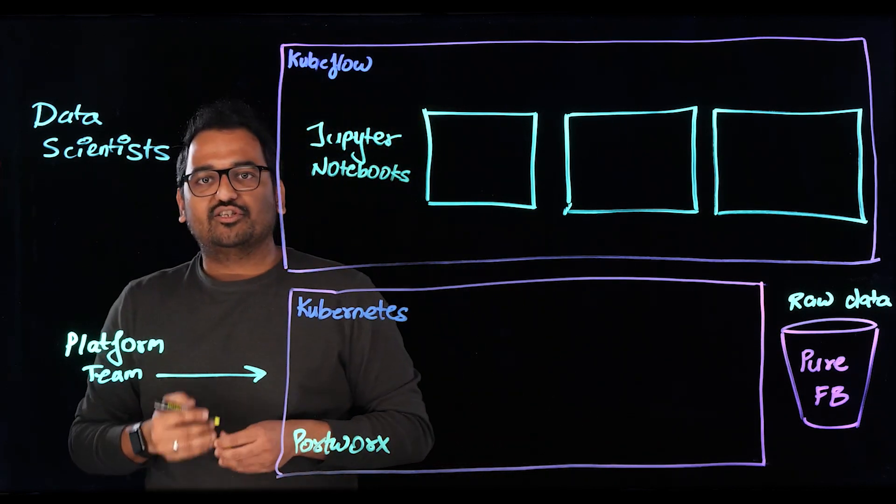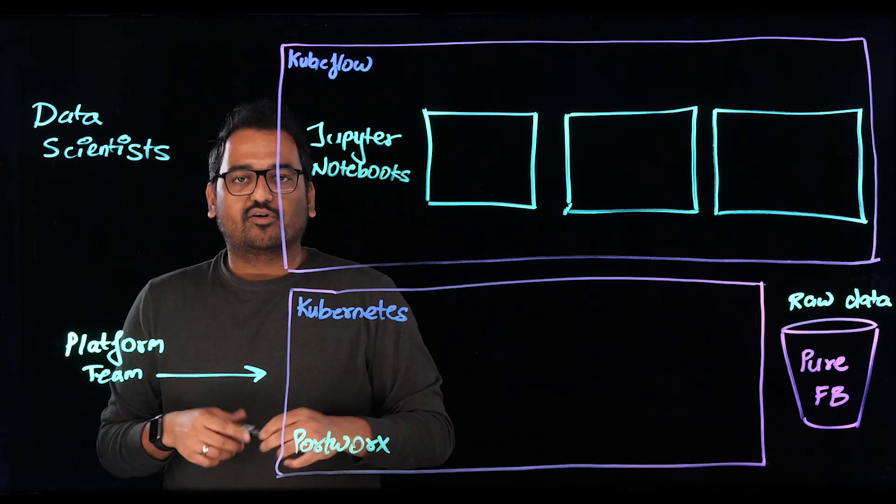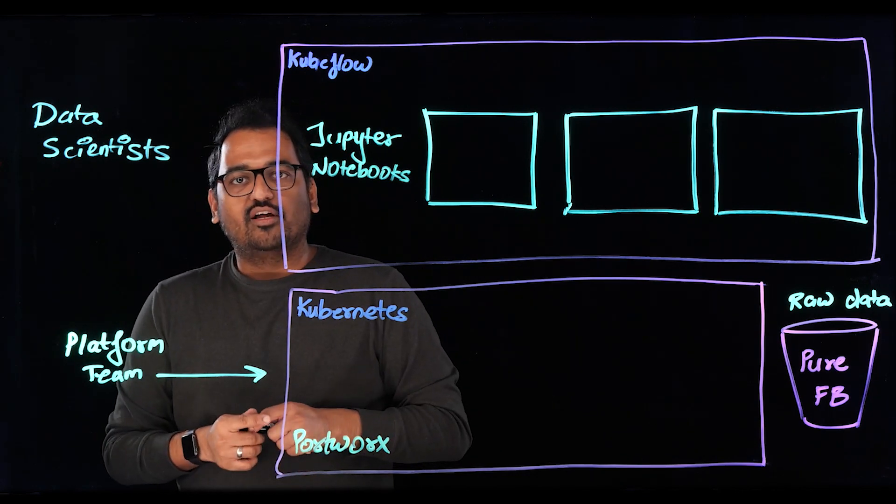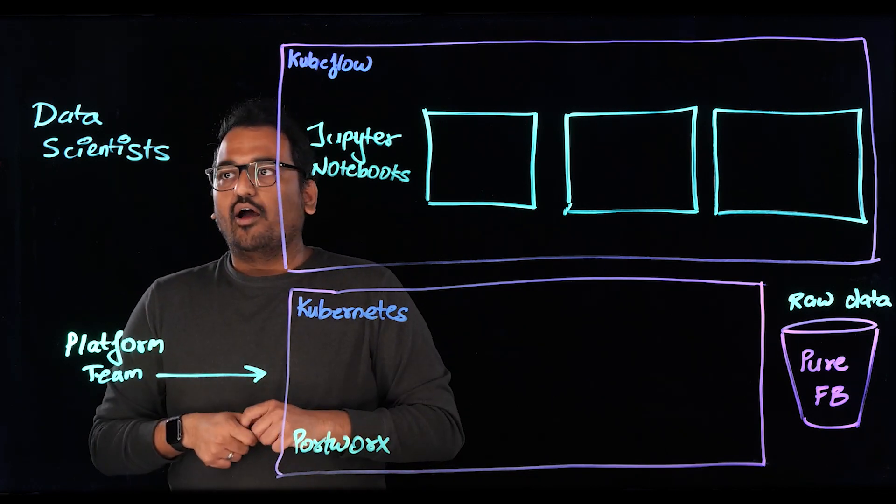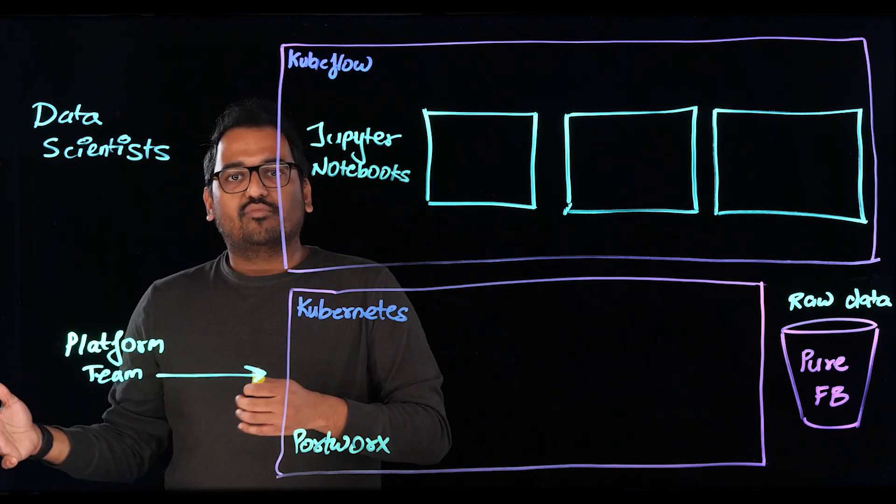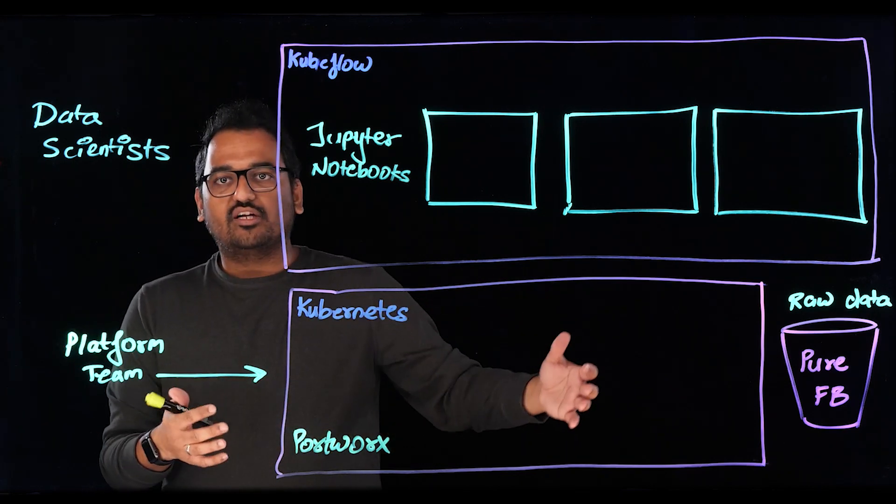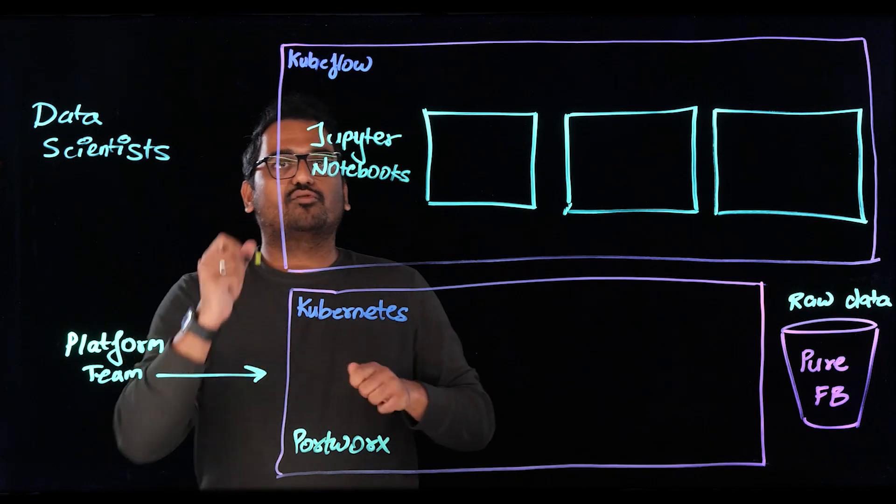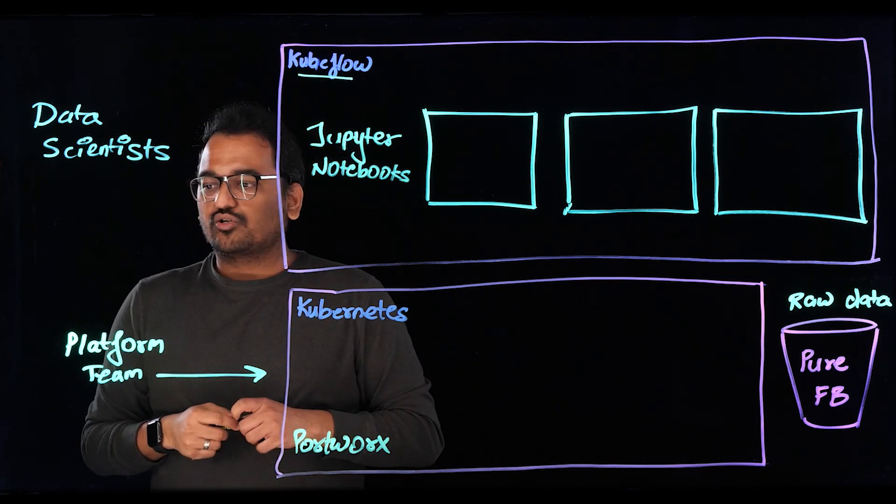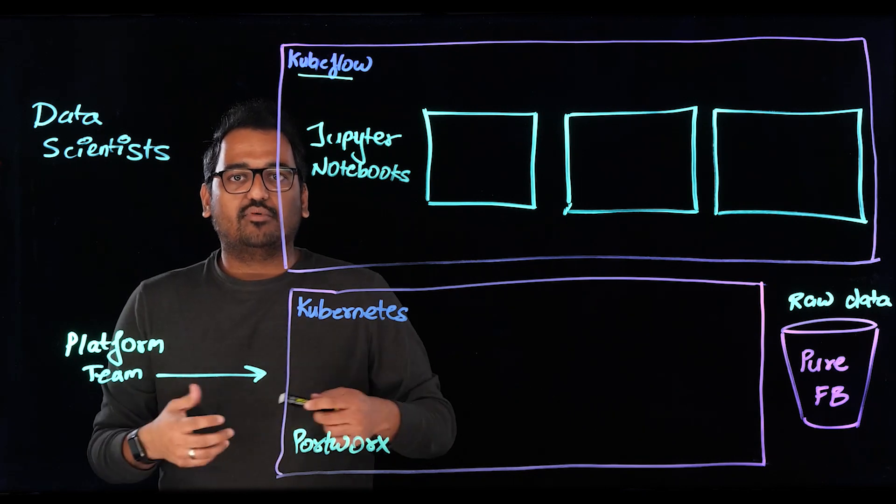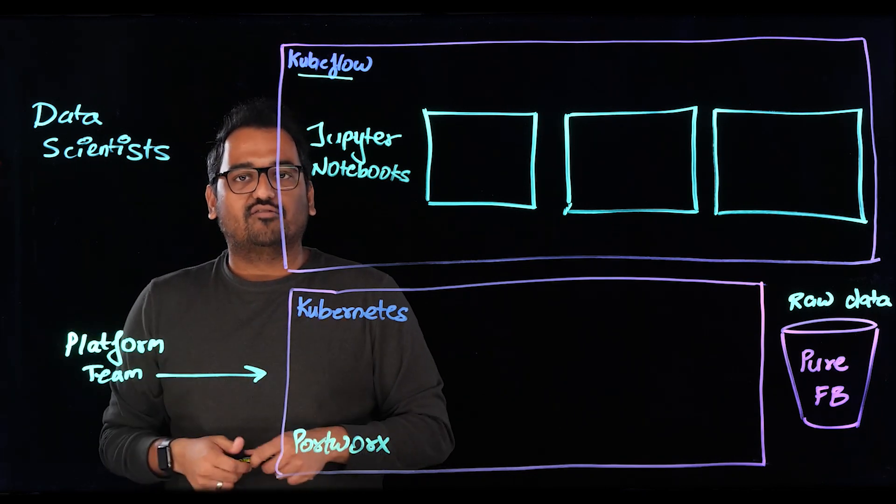But one common issue they have is finding the right amount of resources that they need to run their Jupyter Notebooks, because their notebooks can be used for data curation, model training, model validation, etc. One way to solve this is by deploying a Kubernetes cluster and deploying an open source tool called Kubeflow. The whole purpose of Kubeflow is to make sure ML pipelines are scalable and are available to data scientists on a self-service basis.